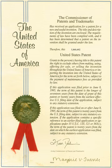A patent is requested by filing a written application at the relevant patent office. The person or company filing the application is referred to as the applicant, who may be the inventor or its assignee. The application contains a description of how to make and use the invention that must provide sufficient detail for a person skilled in the art to make and use the invention. In some countries there are requirements for providing specific information such as the usefulness of the invention, the best mode of performing the invention known to the inventor, or the technical problem or problems solved by the invention.